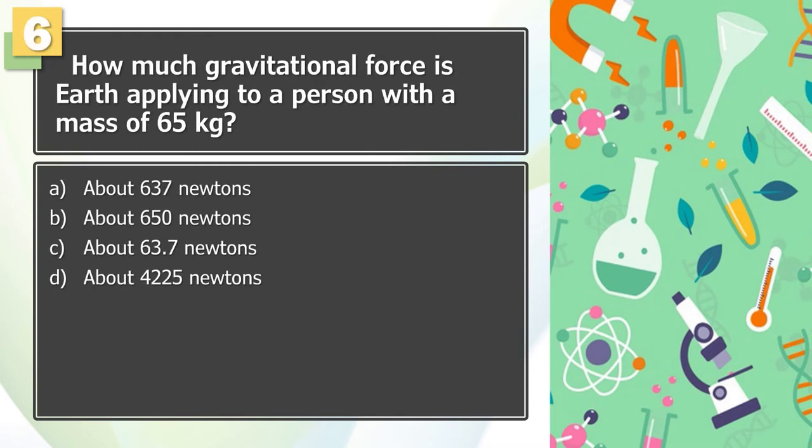Number 6: How much gravitational force is Earth applying to a person with a mass of 65 kilograms? A. About 637 newtons, B. About 650 newtons, C. About 63.7 newtons, D. About 4,225 newtons.